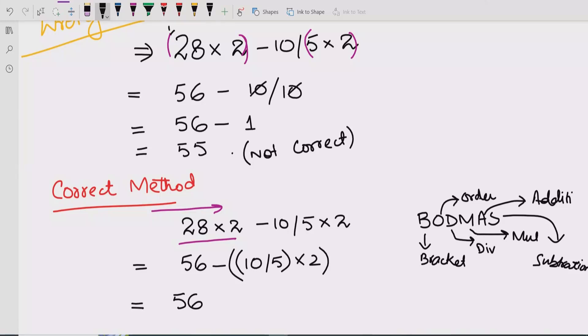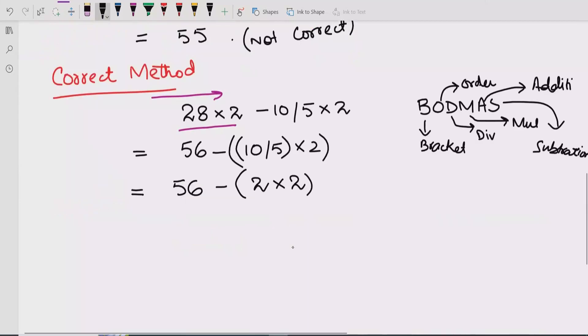56 minus 10 divided by 5 which equals to 2, multiplied by 2. Now 56 minus 2 times 2, which is 4. Now we will get the answer is 52. So this is the correct answer.